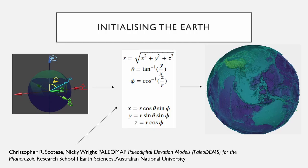To initialize our simulation, we begin by reading data provided by Scotese and Wright, which contains height map data of Earth's historic topography at various points in time. We then use spherical polar coordinate transformations to convert the data from longitudinal and latitudinal coordinates into Cartesian XYZ coordinates.